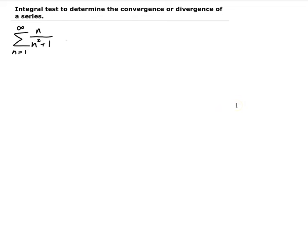In this lesson, we want to use the integral test to determine whether the series converges or diverges. Before we can apply the integral test, we need to see if the conditions are satisfied. There are three conditions: we have to first see if the function corresponding to this is positive, if it's continuous on the respective interval, and decreasing.